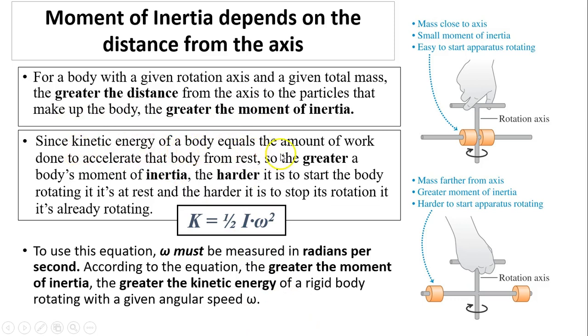Since kinetic energy equals the amount of work to accelerate the body from rest, the greater the moment of inertia, the harder it is to start the body rotating from rest or to stop it if it's already rotating. K equals one half I omega squared. The bigger the I, the more K you have.